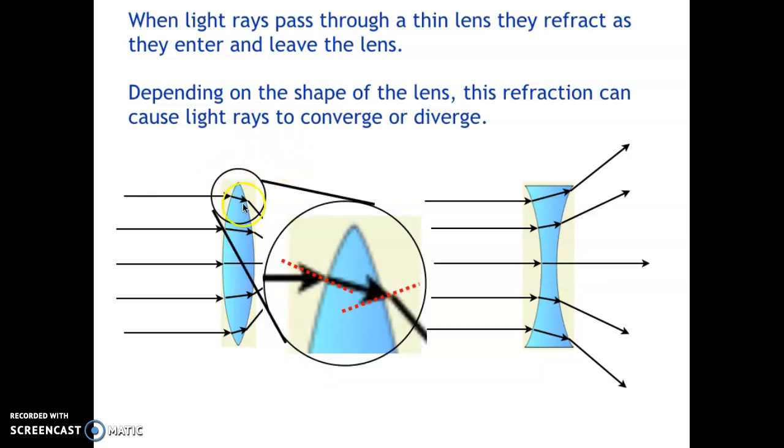If we zoom in on the top part of this lens, we see that as the light ray passes from air into the higher index of refraction of glass, it bends towards the normal line. As it goes from glass back out into air, it bends away from the normal line.